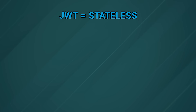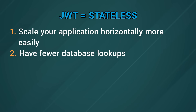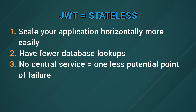Because JWTs are stateless, you can scale your application horizontally more easily because every little JWT can be verified on its own. It also means you have fewer database lookups, so you can have the request response cycle be faster. And finally, because you don't have a central service, you don't have one potential point of failure or slow bottlenecks.